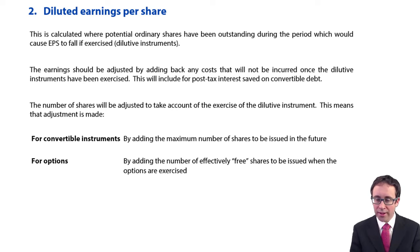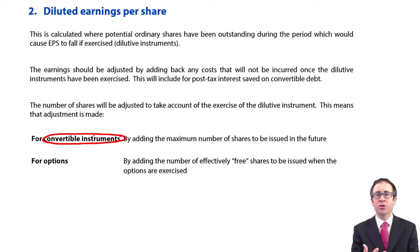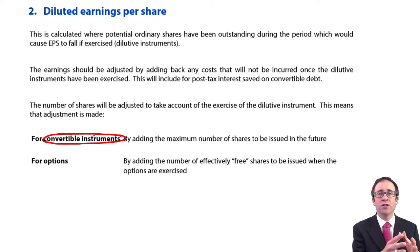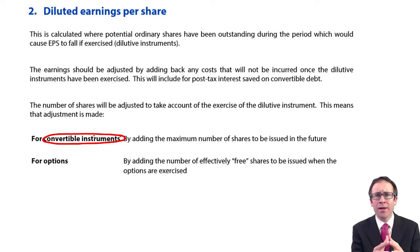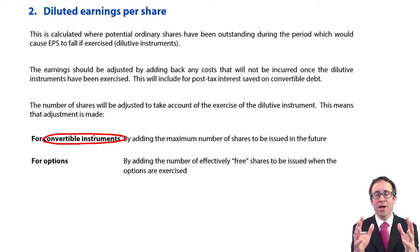So what we've got here are your convertible debt instruments. We've seen those within the financial instruments chapter earlier on. When we looked at our convertible debentures, those debentures were to be converted at some point in the future into ordinary equity shares. So what will be happening in the future is that the number of ordinary shares will be increasing, and there will also be an impact on the earnings, because when we convert the debt into equity, we will no longer be paying any interest.